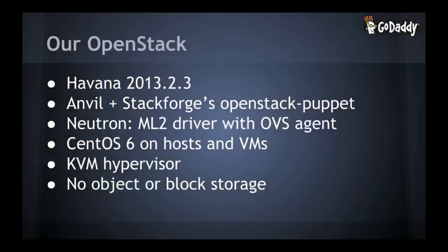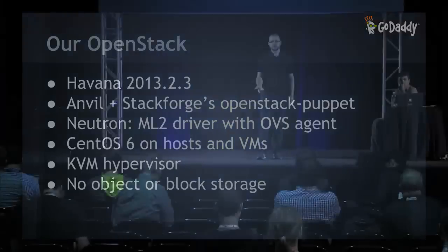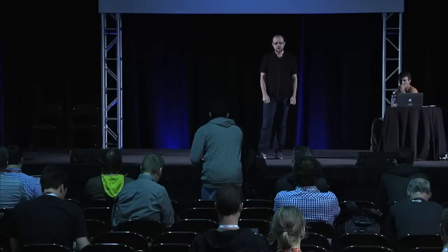This is what our OpenStack looks like. We're running the latest release version of Havana, which is 2013.2.3. We use Anvil to build and patch OpenStack from source, and we use the OpenStack Puppet module on StackForge for configuration management. We use Neutron for networking, the ML2 driver with the OVS agent on the compute nodes. Our operating system on the host and in the guests is CentOS. We use KVM as the hypervisor, and in true minimal viable product fashion, we didn't release any object or block storage with this dev pilot.